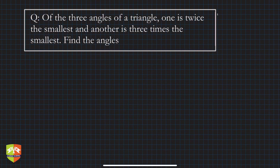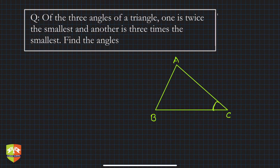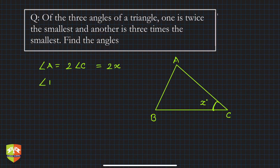In this question it's given that of the three angles of a triangle, one is twice the smallest and another is three times the smallest. We have to find the angles. Let's draw triangle ABC. Let's say angle C is the smallest, and assume it to be x degrees. Then angle A equals twice angle C, which is 2x, and angle B equals three times the smallest, which is 3x.